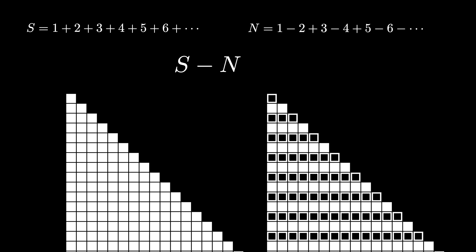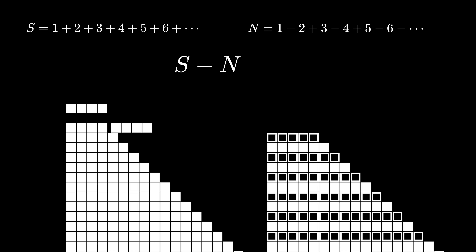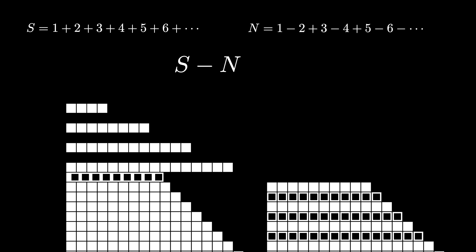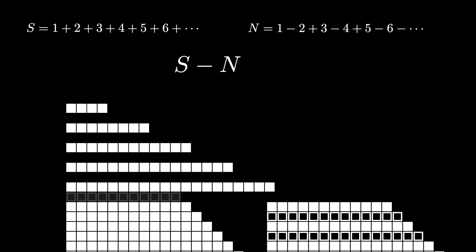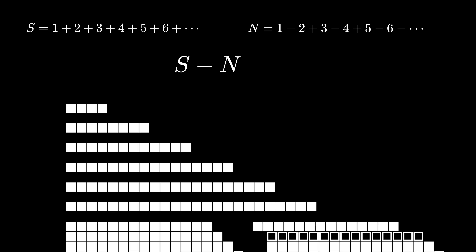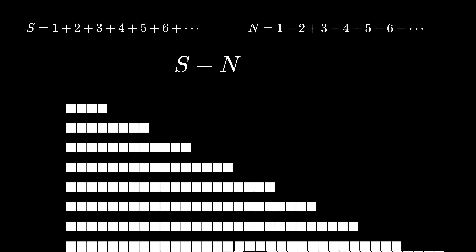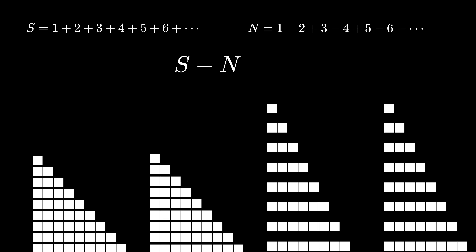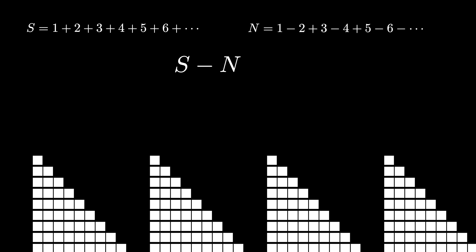This allows us to subtract N from S. The odd rows cancel out because we have equal positive and negative values. In the even rows we get doubling up, and since even integers are twice another number and we're doubling them again, each remaining row is actually 4 times the size of a row in a normal triangular array. That means S minus N can be decomposed into 4 copies of an infinite triangular array, and each of those triangular arrays is itself a copy of S.